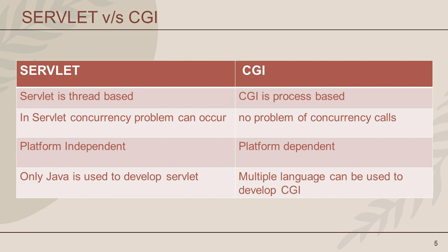In this slide, we will discuss the difference between CGI and servlet. Sometimes it is discussed that CGI also does the same work as servlet. But there are some basic differences between the two. CGI passes a request from a web user to an application program and receives data back to forward to the web user — it is also responsible for dynamic content generation. What is the difference between CGI and servlet?